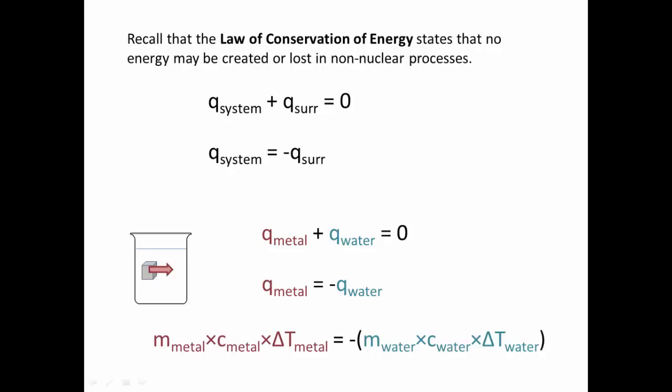So if we were to substitute our equations that we saw in the last slide into this equation, we would substitute if we were given specific heat, the m of the metal times the specific heat of the metal times the delta T of the metal is equal to negative that of the water. So mcΔT of the water. Here we need to keep track of our masses, our specific heats, and our delta T's, because they are going to be different for the metal and for the water.